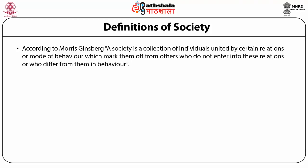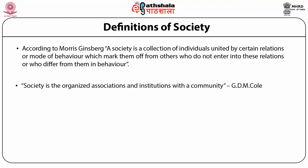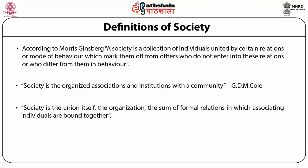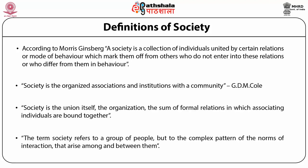Definitions of society: According to Morris Ginsberg, a society is a collection of individuals united by certain relations or mode of behaviour which mark them off from others who do not enter into those relations or who differ from them in behaviour. According to GDM Kohle, society is the organised associations and institutions within a community. Another scholar defined society as the union itself, the organisation, the sum of formal relations in which associating individuals are bound together. The term society refers not to a group of people, but to the complex pattern of the norms of interaction that arise among and between them.